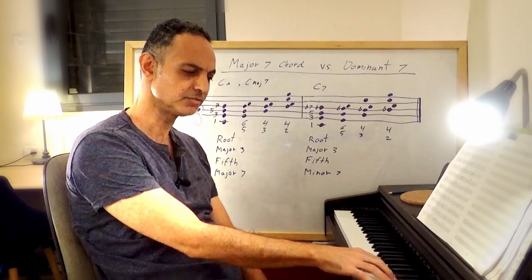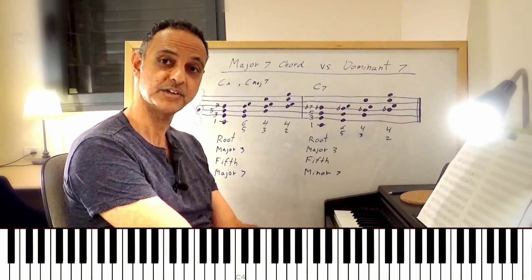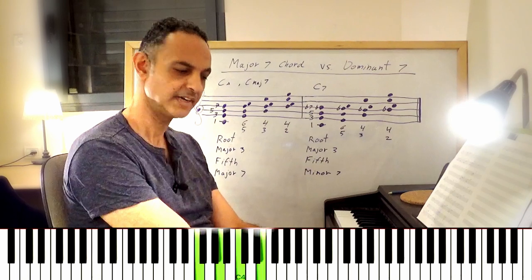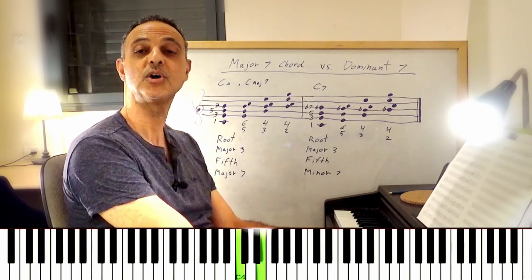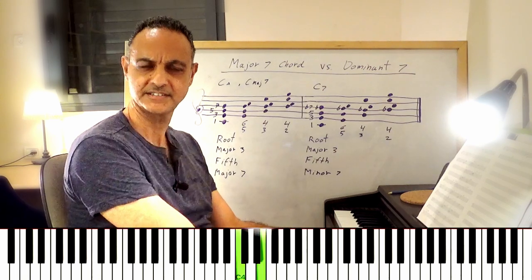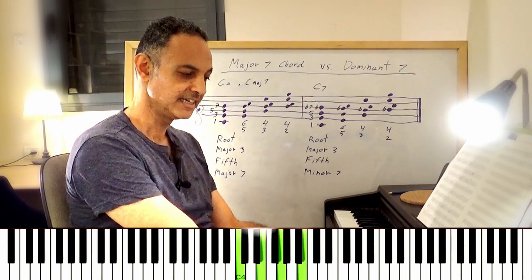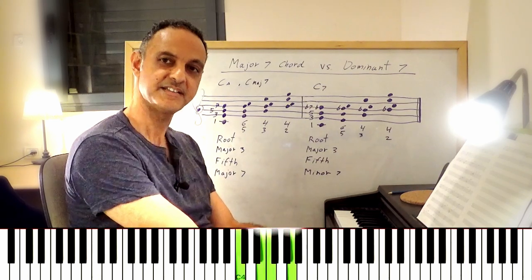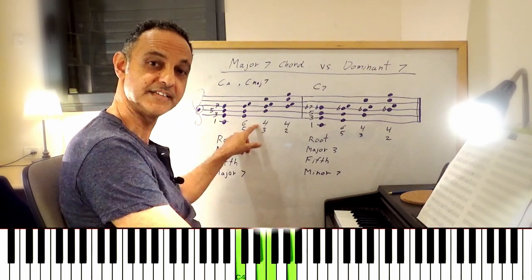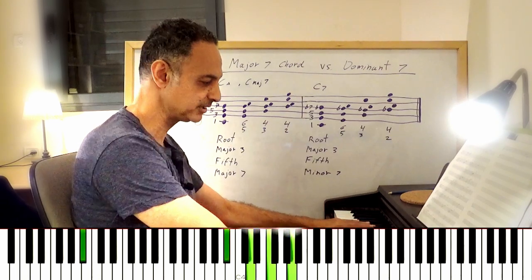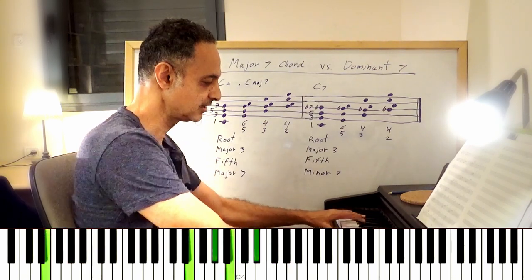Another approach is to start from root position but try to do as little movement as possible. For example, C major 7 to F major 7: C and E are common tones, so leave them and take the upper two notes down a step — giving you F major 7, 2nd inversion (4-3). Then going down by 5th: B flat root position, to E flat 4-3, to A flat root position, to D flat 4-3, and so on.